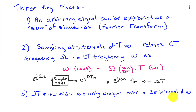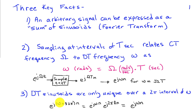The third fact is that discrete time sinusoids are only unique over a 2π interval of frequency. If I take a sinusoid e^(jωn) and shift the frequency by any integer multiple of 2π, I get exactly the original sinusoid back — because e^(j2πl·n) equals 1 for any integer l. This means we can't distinguish between a sinusoid with frequency ω and one with frequency ω + 2π or ω + 8π.